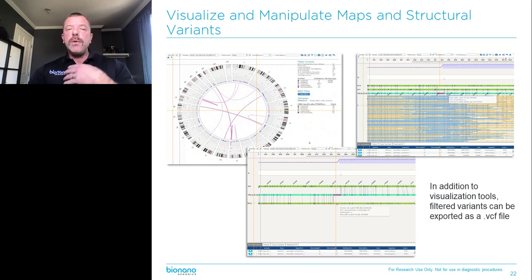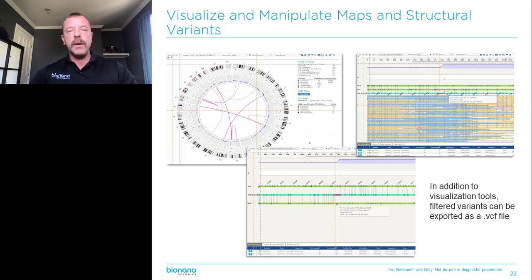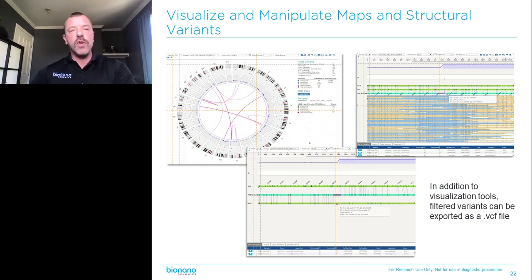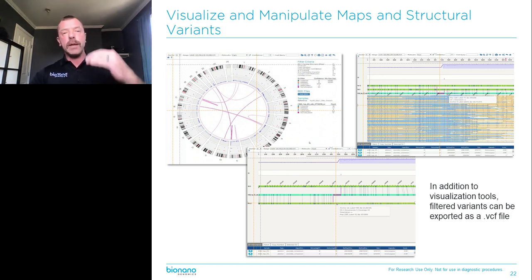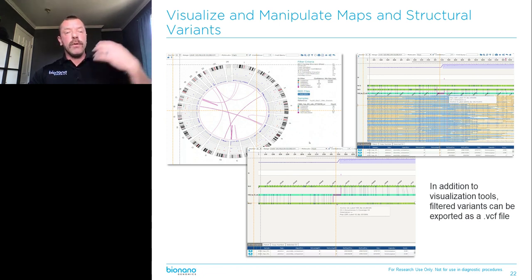When you look at your genome analyzed by BioNano, you see something like this circus plot. The lines in the middle in magenta are translocations between the different chromosomes. In concentric circles from the middle, we have a copy number tool that works just like array or NGS copy number by counting the molecules aligning to each part of the genome. And then we see inversions, deletions, and insertions as well.